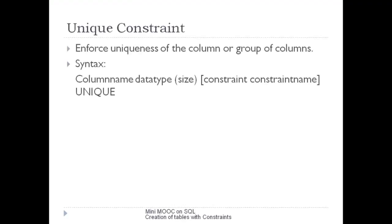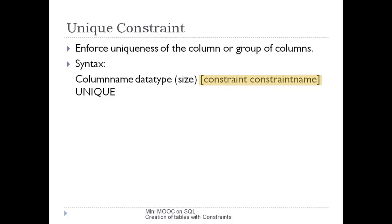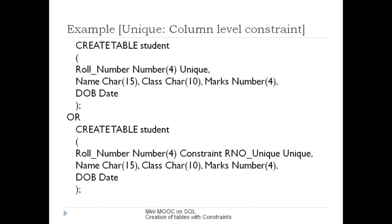To enforce uniqueness of a column or group of columns, we can apply the UNIQUE constraint. It removes duplicacy or repetition of data. In the syntax, we write UNIQUE alongside the column name, data type, and size. Optionally, we can specify a constraint name. Let us apply this constraint on the student table, where row number is made unique. We can also specify our own constraint name during creation of the table.